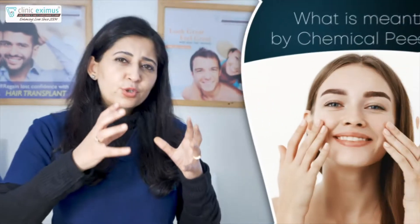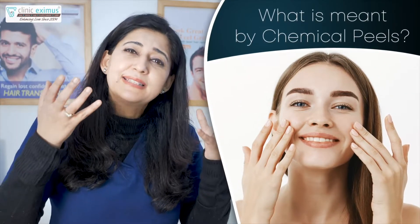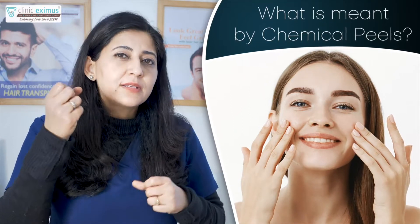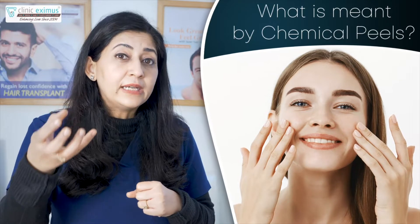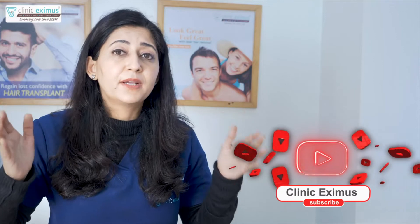Now let's start — what are chemical peels? What exactly is a chemical peel? Chemical peels are substances, chemicals that are derived from fruits, vegetables, and milk. There are thousands of different types of chemical peels available.